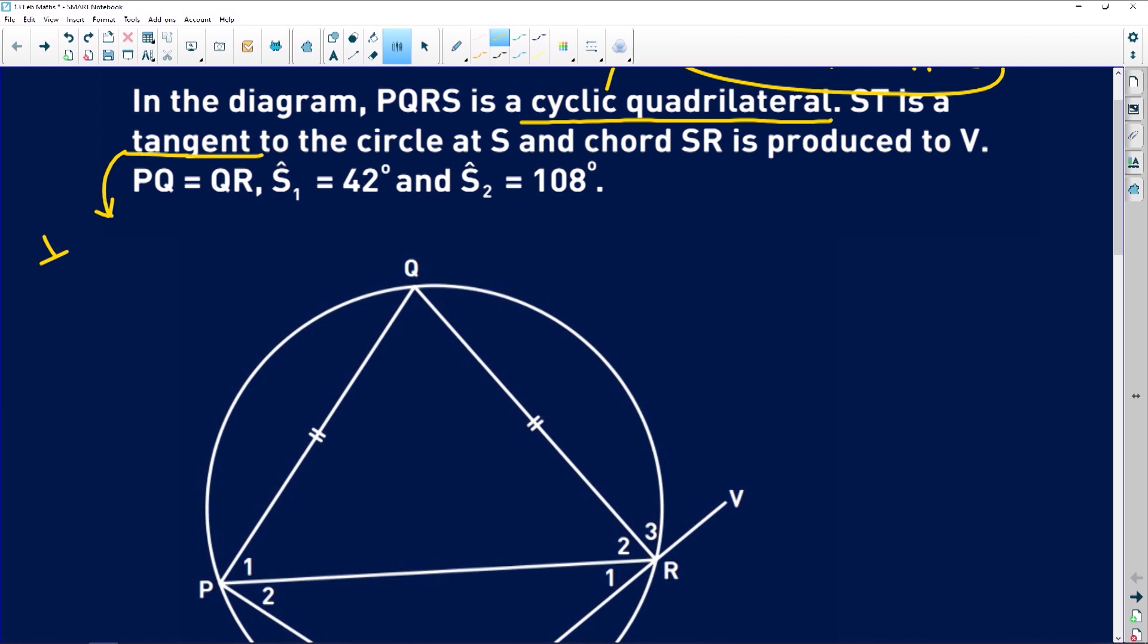Okay, perpendicular to a diameter or the radius. And also, it will be the tan chord theorem. Remember, very important. The tangent subtends the same angle next to the chord as the chord subtends on the circumference. Okay.